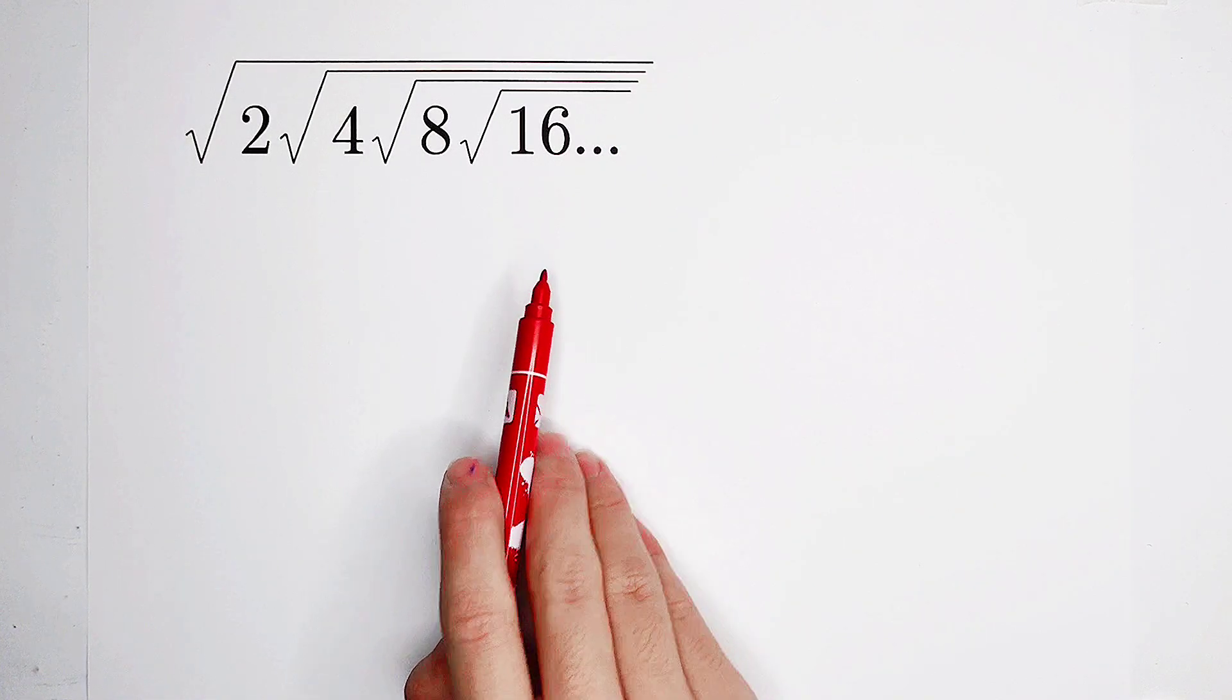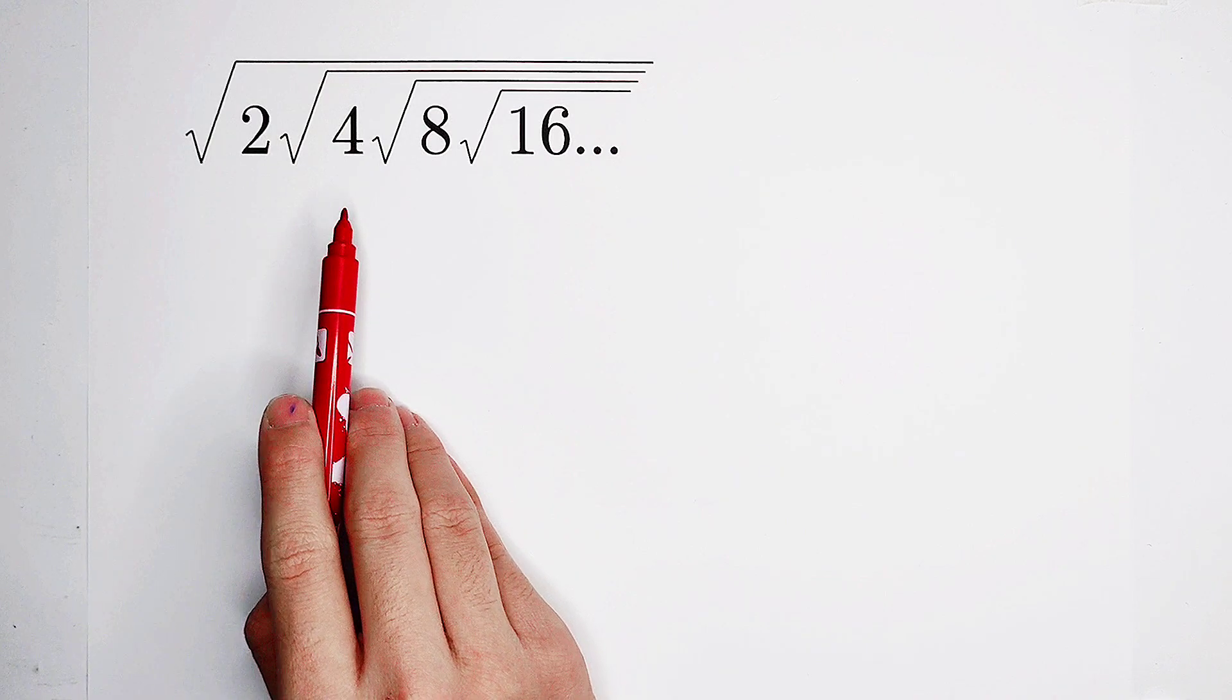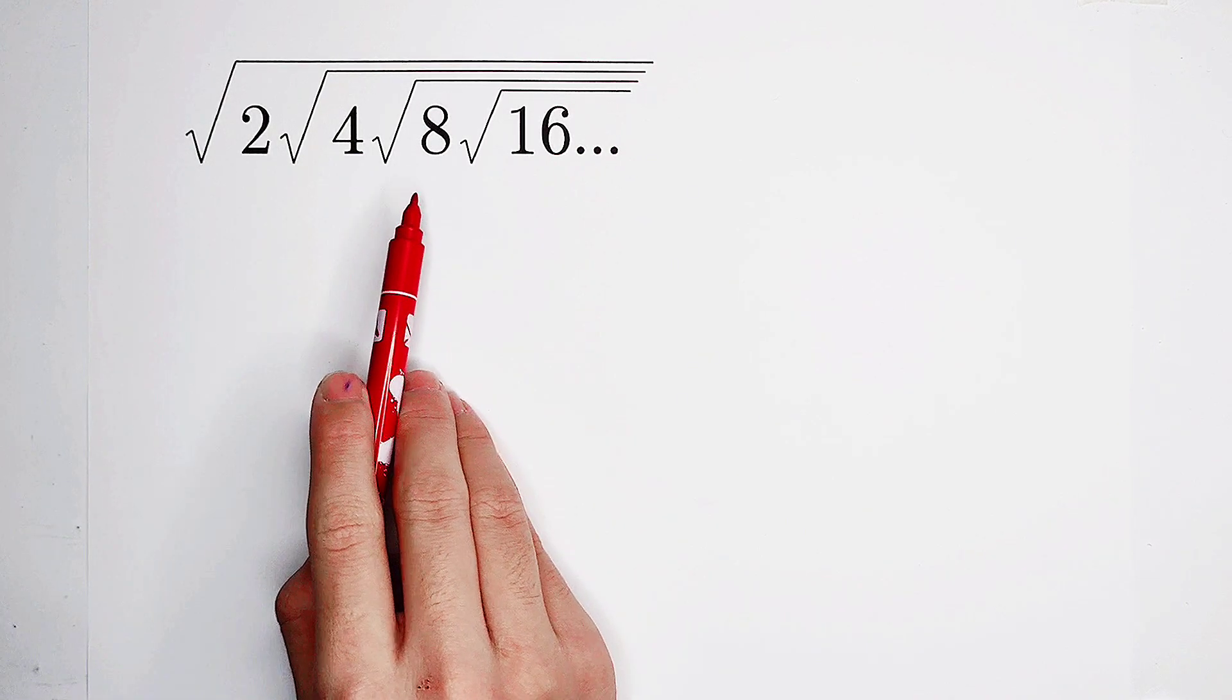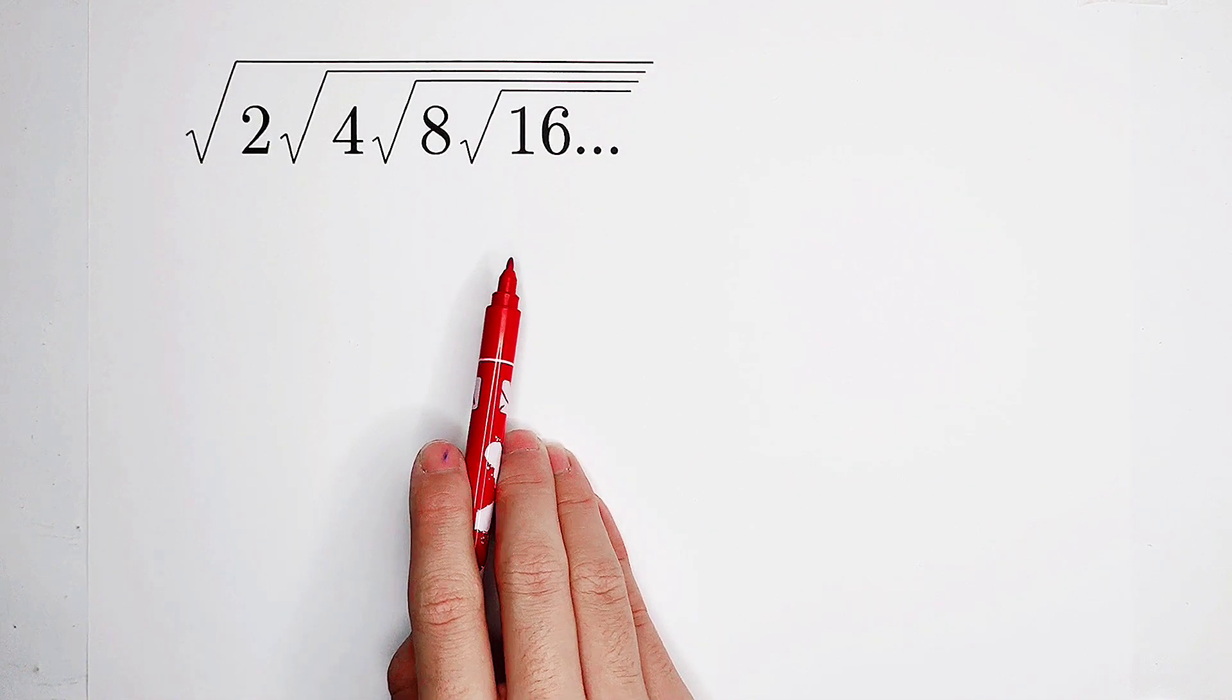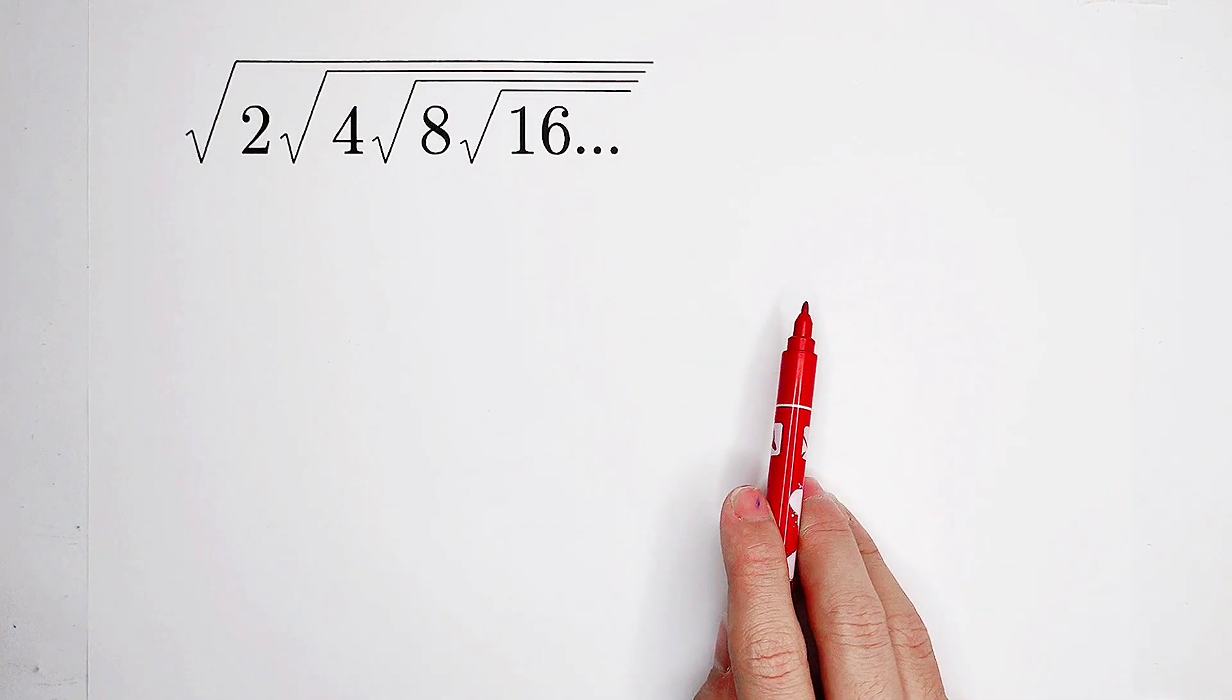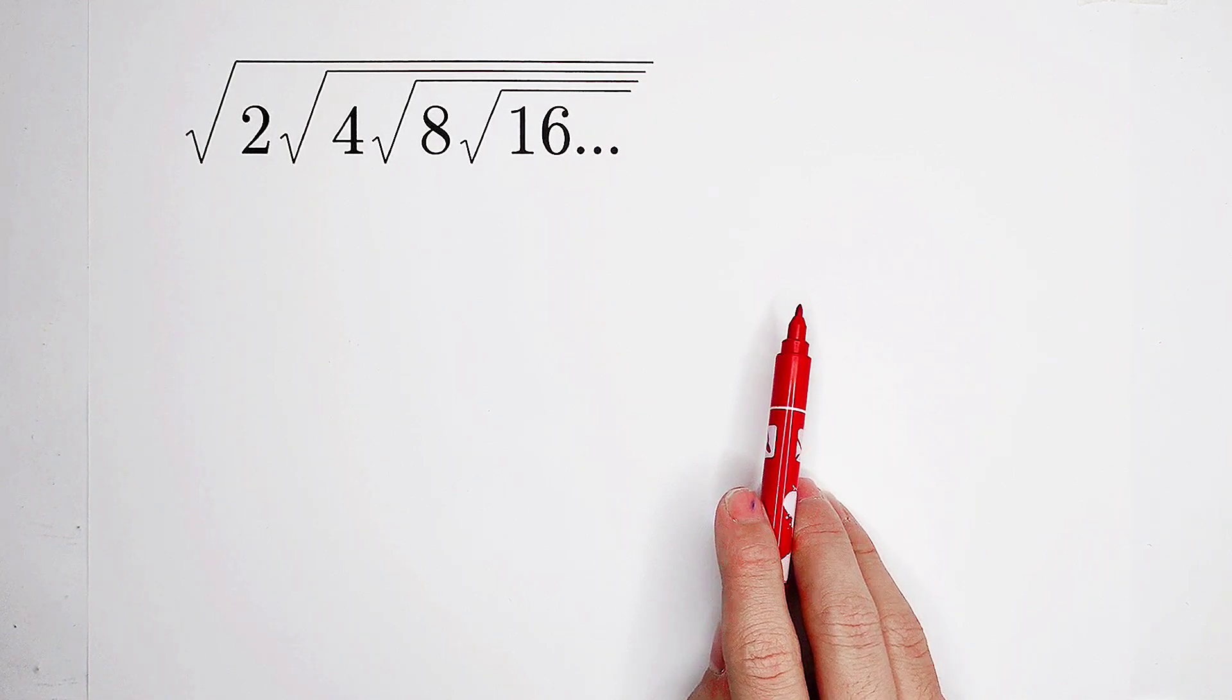2 is 2 to the power of 1. 4 is 2 to the power of 2. 8 is 2 cubed. 16 is 2 to the power of 4. That means all the numbers are integer powers of 2. Actually, positive integer powers of 2.